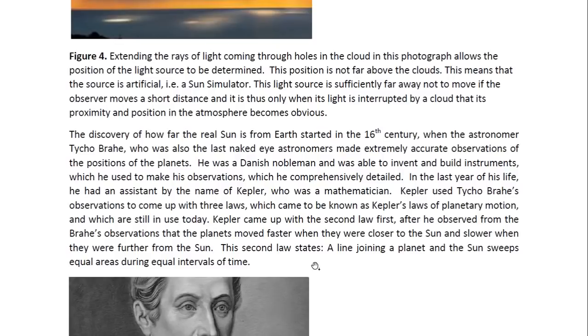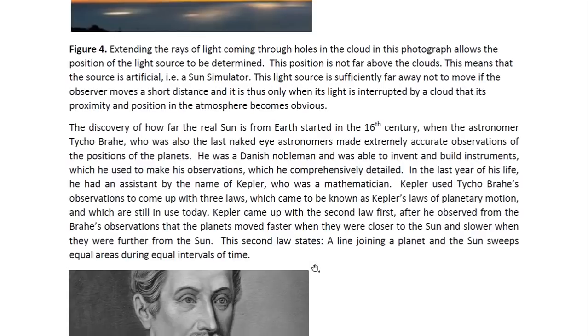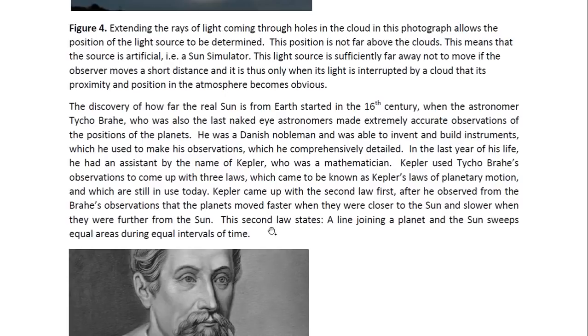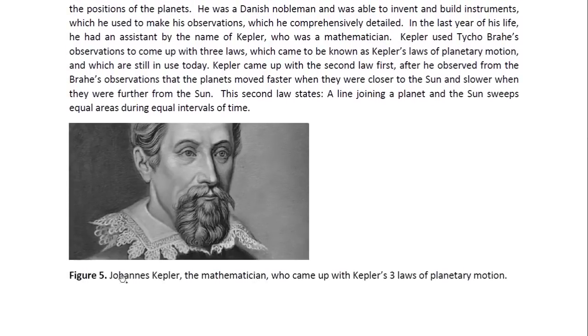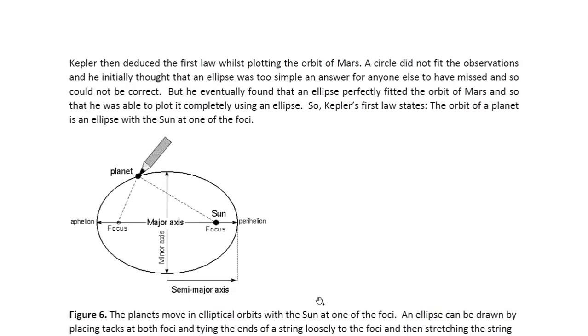Kepler came up with a second law first. After he observed from Brahe's observations that the planets moved faster when they were closer to the sun and slower when they were further from the sun. So he described that effect in terms of his second law, which states a line joining a planet and the sun sweeps equal areas during equal intervals of time. And here is Johannes Kepler. It's a painting of him. And who came up with Kepler's three laws of planetary motion.